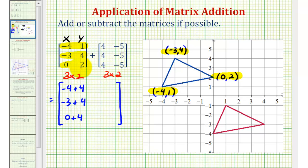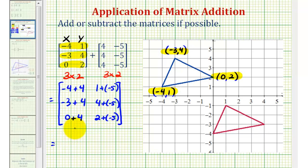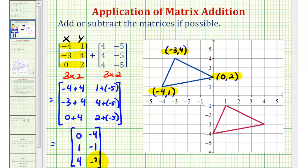Going down the second column, we'll be adding negative five each time: one plus negative five, four plus negative five, and two plus negative five. So the results are: negative four plus four is zero, negative three plus four is one, zero plus four is four. One plus negative five is negative four, four plus negative five is negative one, and two plus negative five is negative three.